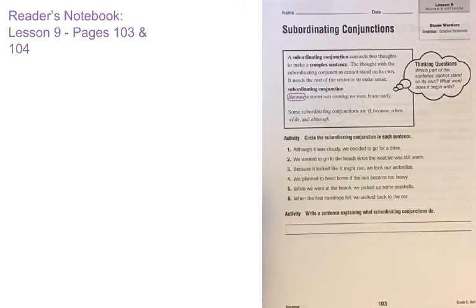What I always say is: which part of the sentence is not a sentence on its own? Which one could not stand on its own? Then look for the word that it begins with. In our example sentence, it says, 'Because a storm was coming, we went home early.' If you break that into two parts, you have 'because a storm was coming' and 'we went home early.'